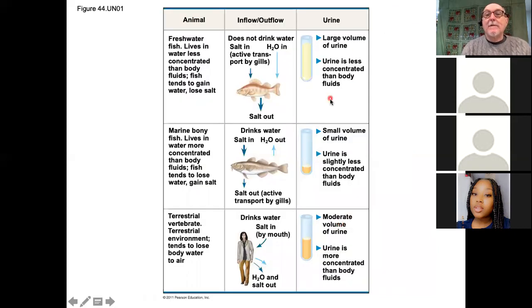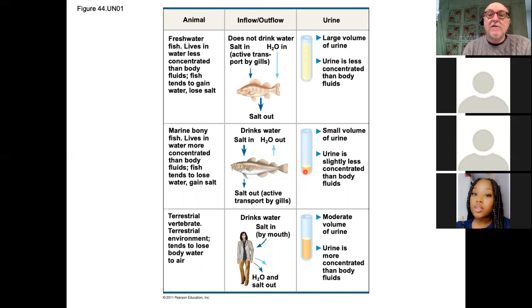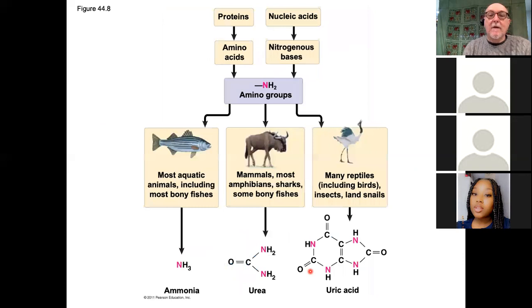In summary: a freshwater fish voids as much water as possible — abundant, extremely dilute urine. Marine fish conserve water as much as possible, drinking continuously and producing a small amount of highly concentrated urine. Humans are kind of in the middle, producing a moderate amount of urine that is really dilute compared to a desert animal.